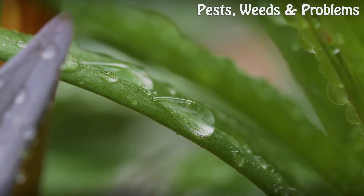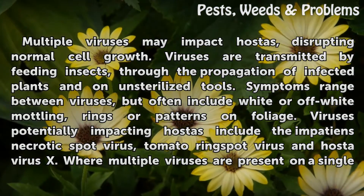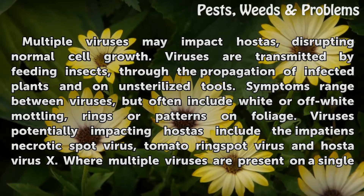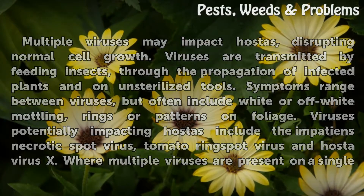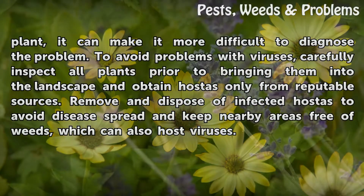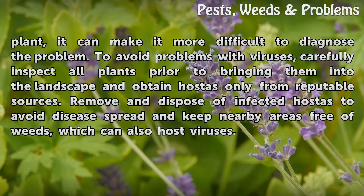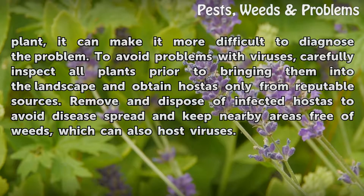Viruses. Multiple viruses may impact hostas, disrupting normal cell growth. Viruses are transmitted by feeding insects, through the propagation of infected plants, and on unsterilized tools. Symptoms range between viruses but often include white or off-white mottling, rings, or patterns on foliage. Viruses potentially impacting hostas include Impatiens Necrotic Spot Virus, Tomato Ring Spot Virus, and Hosta Virus X. Where multiple viruses are present on a single plant, it can make diagnosis more difficult. To avoid problems, carefully inspect all plants prior to bringing them into the landscape, obtain hostas only from reputable sources, remove and dispose of infected hostas, and keep nearby areas free of weeds, which can also host viruses.